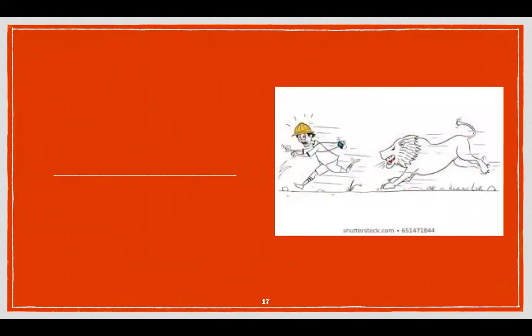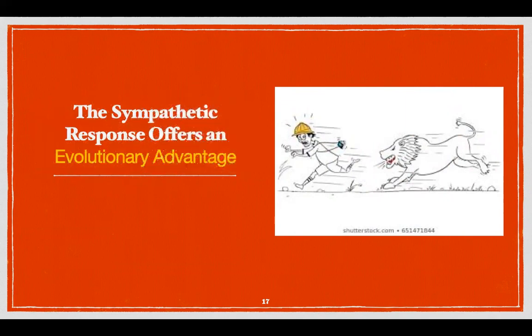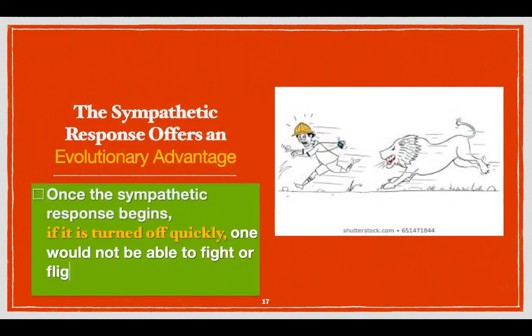This slow off effect of norepinephrine has an evolutionary advantage. Think about what would happen if this response were turned off quickly — one would not be able to run away from a predator, because the muscles and blood flow are activated by the fight-or-flight response. One would not be able to fight a prey either. So the sympathetic response offers an evolutionary advantage.